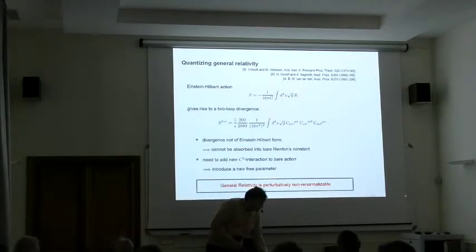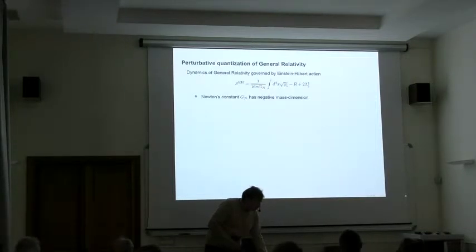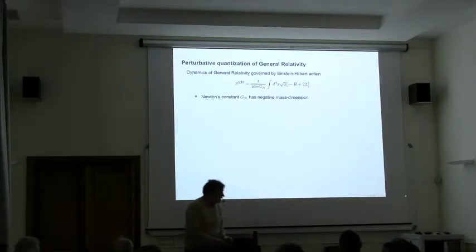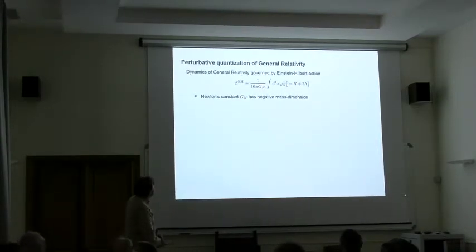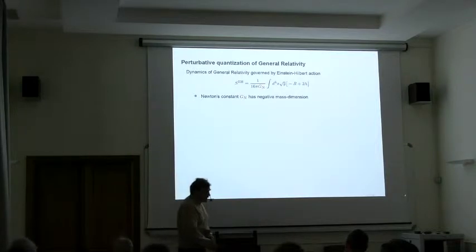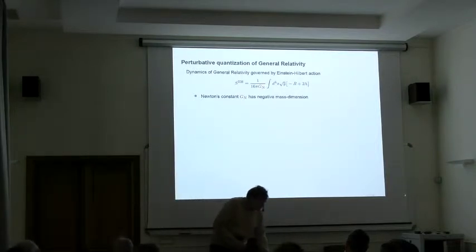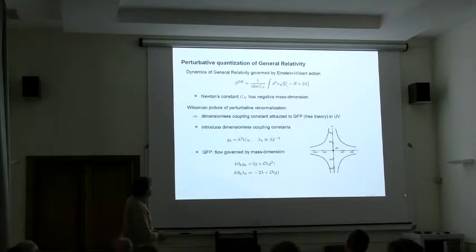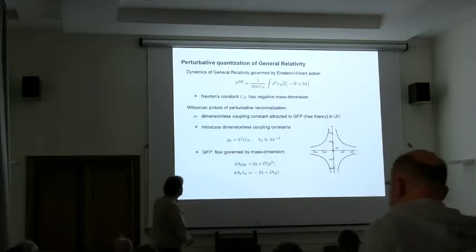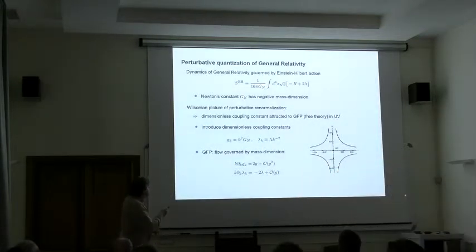We can cast this into a different form. What actually is the source of the trouble is the mass dimension of Newton's constant. If you do a dimensional analysis of this expression, you find that this guy has negative mass dimension. Then you can check with field theories that are actually perturbatively non-renormalizable, and you find that they share the property that all the coupling constants have either zero or positive mass dimensions. This is what makes this action different from usual textbook quantization.